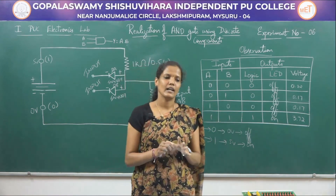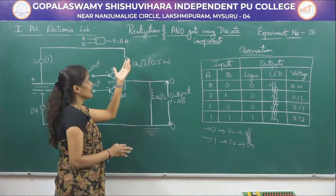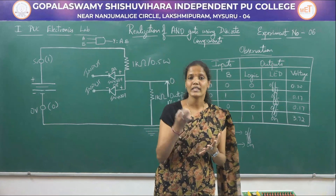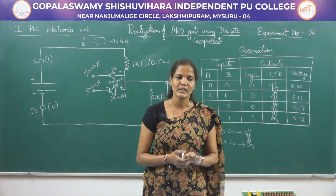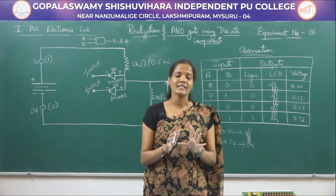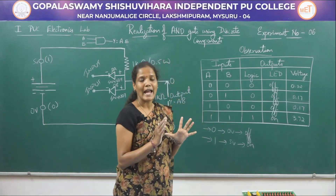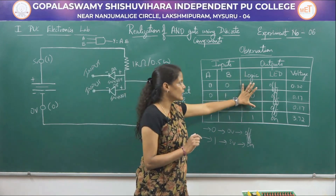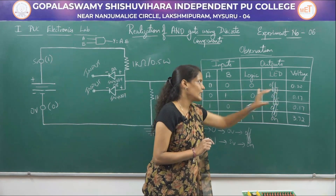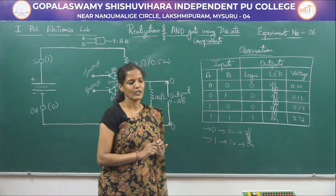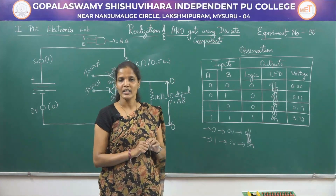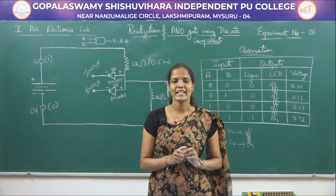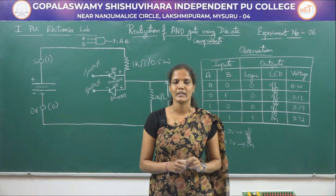From the truth table, we can easily tell that the LED response, the voltage response, and the logical output are clearly matching with each other. This is the experiment of realizing an AND gate using discrete components — that is, only diodes and resistors. The result is very simple: we constructed the circuit where the AND gate was matching with the logical output, LED response, as well as the voltage response according to the observation table. Let me conclude this experiment at this point. In my next session, I will be coming with a new experiment. Thank you.